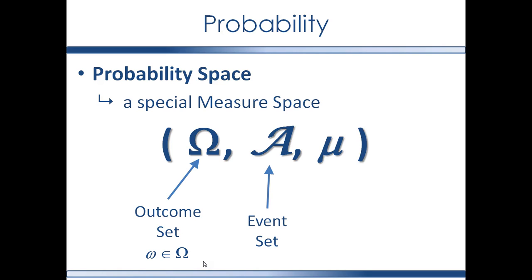The second component is the event set. We call the sigma algebra on the outcome set the event set, represented with the same italicized A from the measure theory videos. The elements in the event set are called events. The event set allows you to categorize the outcomes in whatever manner you want to define them — it represents the events to which you can assign a measure. It's particularly useful for the event set to be the power set of the outcome set, because that allows you to assign a measure for every possible subset of the outcome set.